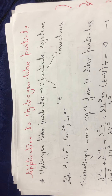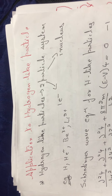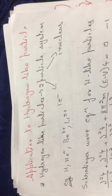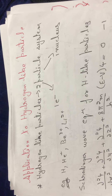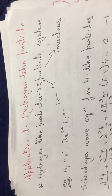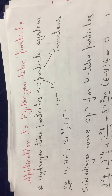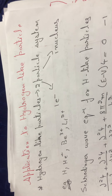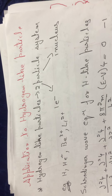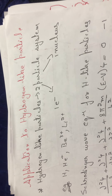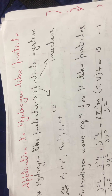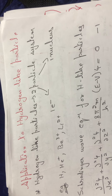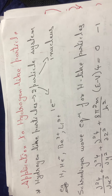Application of quantum mechanics and the Schrödinger wave equation to hydrogen-like particles. First of all, we need to know what is meant by a hydrogen-like particle. A hydrogen-like particle means any particle which has only two particles — it is a two-particle system.